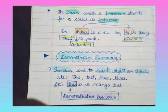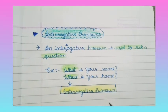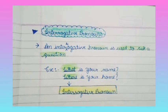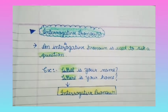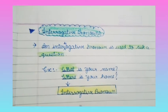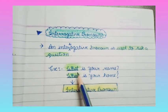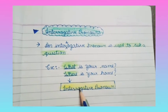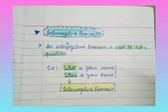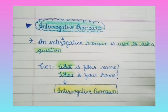Now, interrogative pronoun: an interrogative pronoun is used to ask a question. For example, 'What is your name?' or 'Where is your home?' — so 'what' and 'where' are interrogative pronouns. This completes part one of the video.